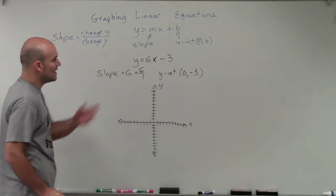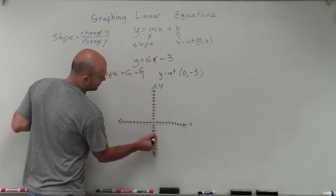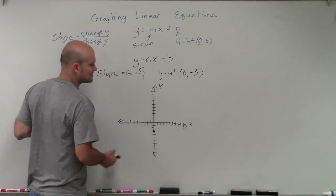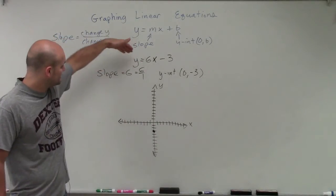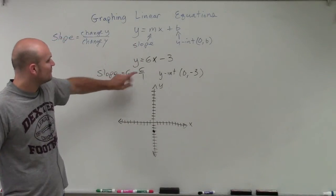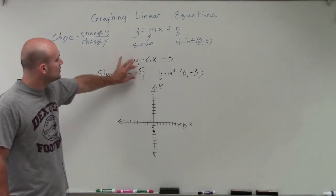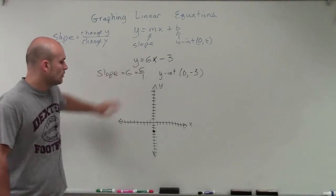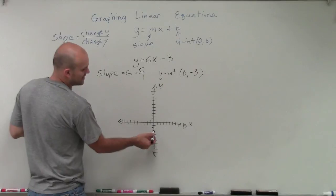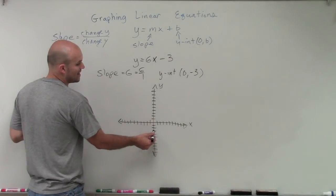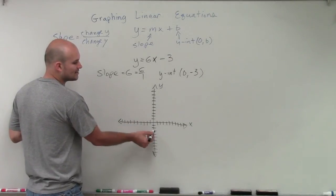All right. So my y-intercept is at 0 comma negative 3. I'm going to go down and plot my y-intercept at 0 comma negative 3. Then I need to go ahead and find my slope — use my slope triangle to find my next point, which is 6 over 1. So the change in y is positive 6, meaning I need to go up 6 units on the y-axis from my y-intercept.